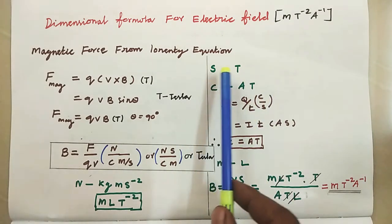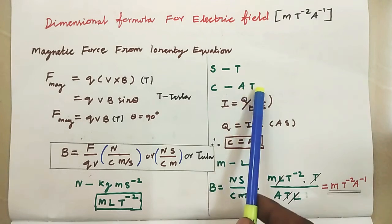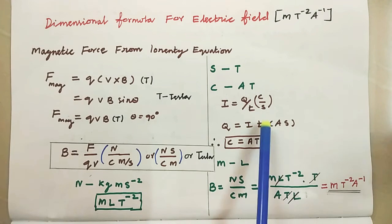Per second, T, coulomb, A, T. So, I is equal to charge by time taken. So, charge equal to I, T.